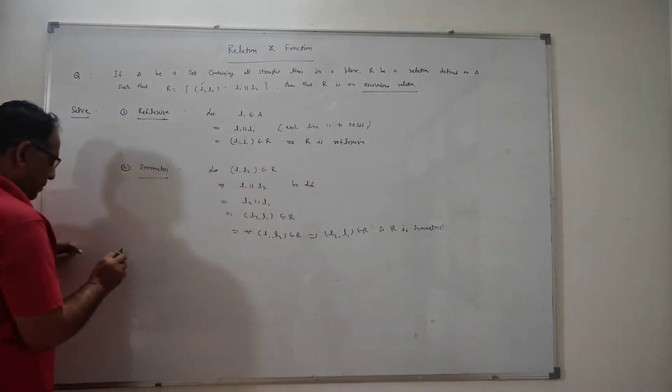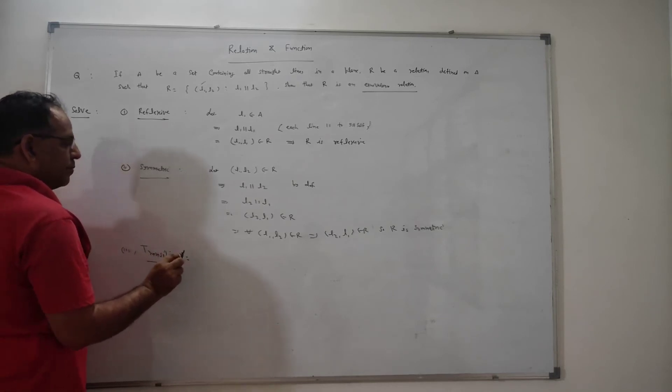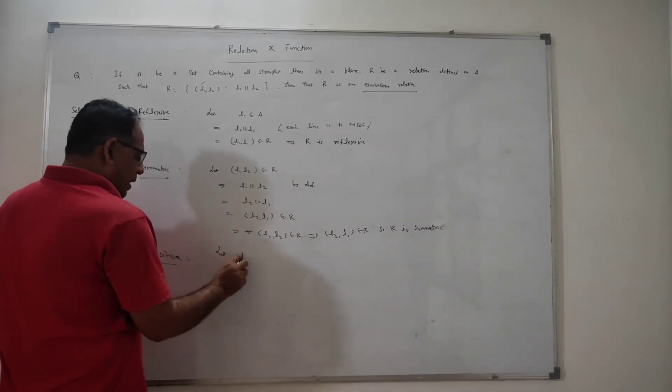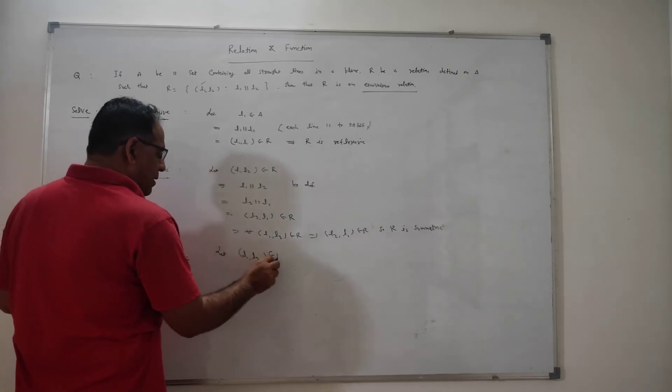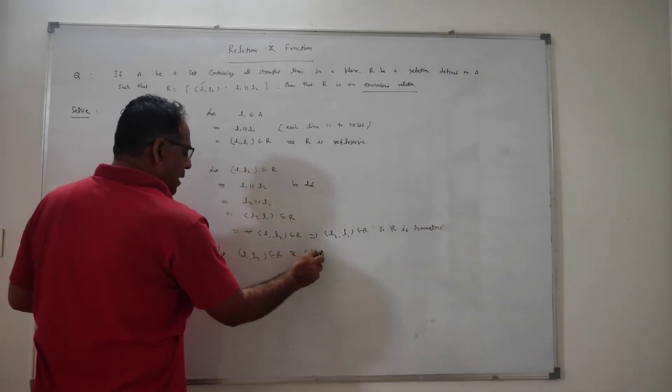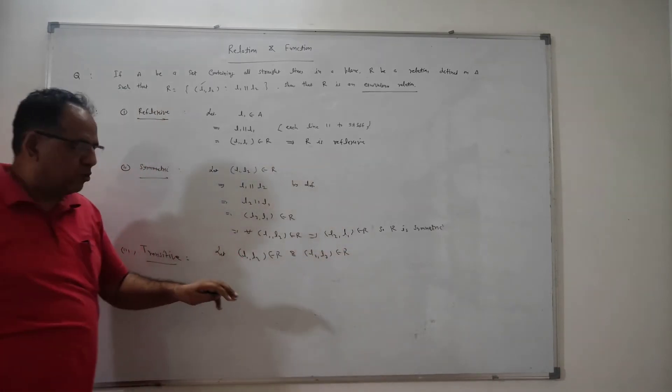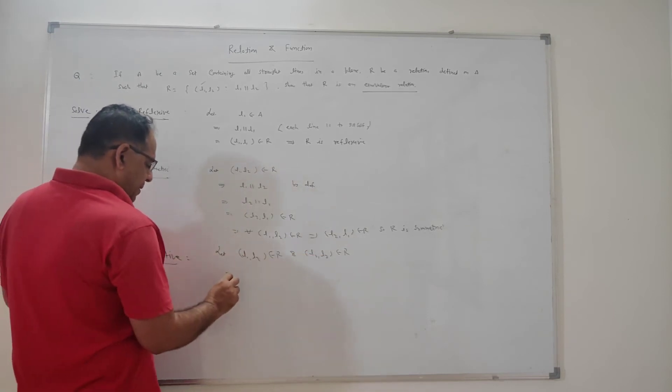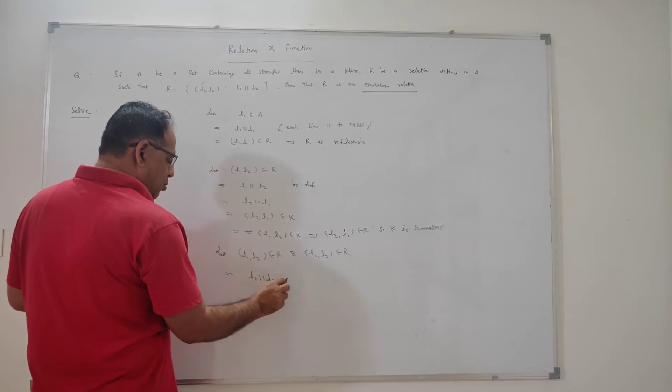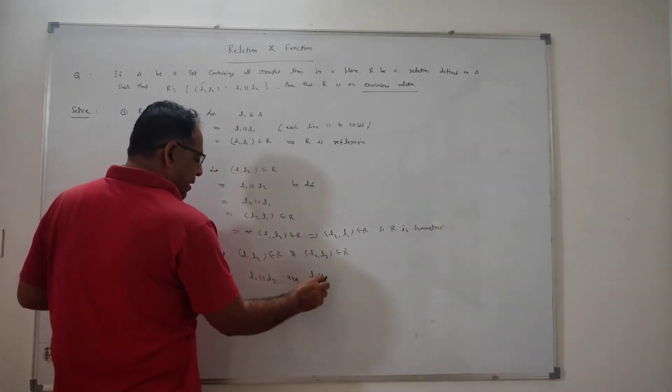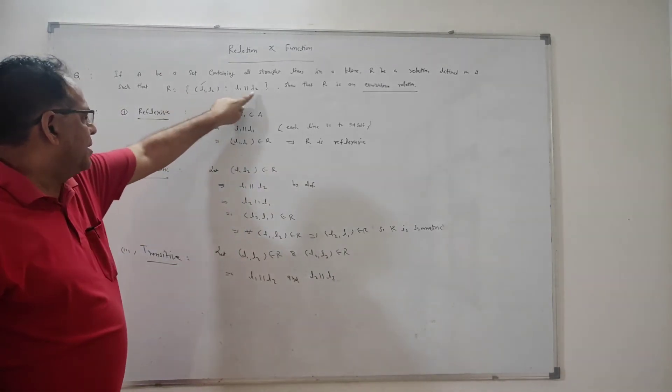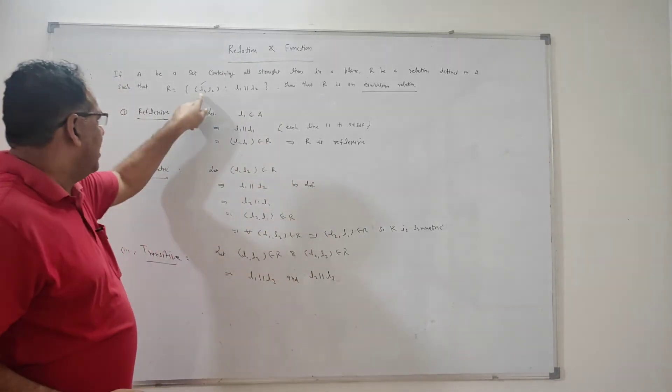Now, the third condition is transitive. For discussion about transitivity, we take that (L1, L2) belongs to R and (L2, L3) belongs to R. Here we take two consecutive ordered pairs. These are elements of relation R. By the definition, L1 is perpendicular to L2, and L2 is perpendicular to L3. According to the definition, if (L1, L2) belongs to R, then L1 is perpendicular to L2. If (L2, L3) belongs to R, then L2 is perpendicular to L3.